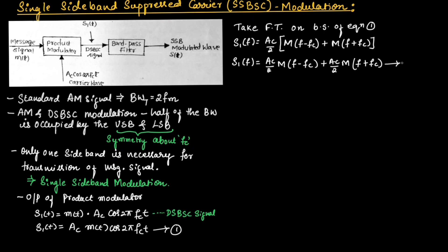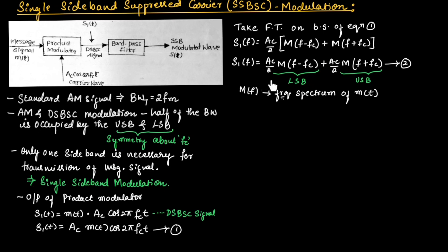In equation number 2, the first part (AC/2)·M(F − FC) represents the lower sideband and the second part (AC/2)·M(F + FC) represents the upper sideband. Here, M(F) is the frequency spectrum of message signal M(t). When this DSBSC signal is passed through a band pass filter centered at FC, it passes either the upper sideband or the lower sideband as the output, so we are transmitting only one sideband.